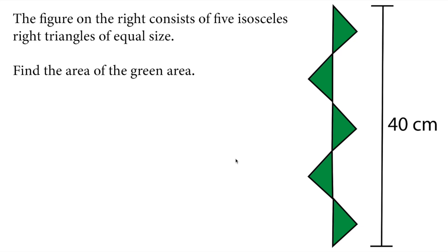In this video, we will solve a 6th grade math olympiad question. Let's read the question. The figure on the right consists of 5 isosceles right triangles of equal size. Find the area of the green area.